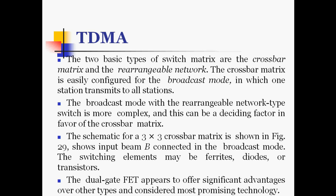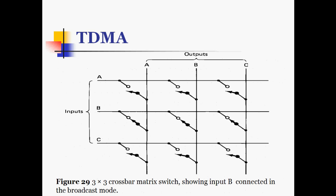The 3×3 crossbar matrix is shown with input B connected in broadcast mode. The switching elements may be ferrite diodes or transistors; dual gate field effect transistors appear to offer significant advantages and are considered the most promising technology. In the 3×3 crossbar matrix switch showing B in broadcast mode, input B is connected to all three outputs — A, B, and C destinations — while other switches remain open.